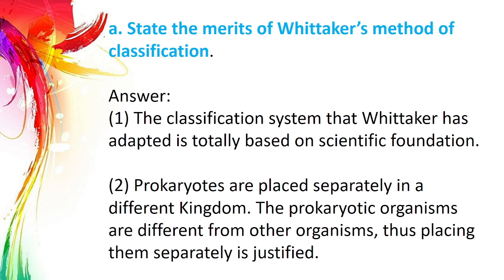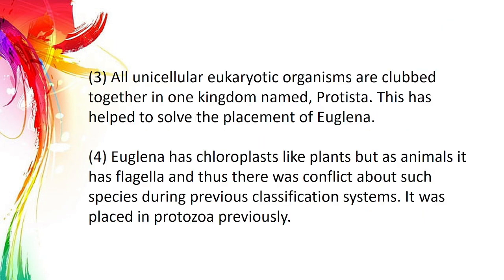Question 5A: State the merits of Whittaker's method of classification. Point 1: The classification system that Whittaker adapted is totally based on a scientific foundation. Point 2: Prokaryotes are placed separately in a different kingdom, as prokaryotic organisms are different from other organisms. Point 3: All unicellular eukaryotes are clubbed together in one kingdom named Protista; this has helped to solve the placement of Euglena.